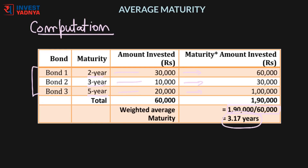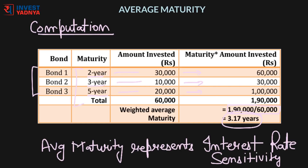So the example shows the average maturity of the debt fund is 3.17 years, although the individual bonds have a maturity which is different from 3.17 years. Average maturity tells us the weighted average maturity of the fund, which in turn represents interest rate sensitivity.